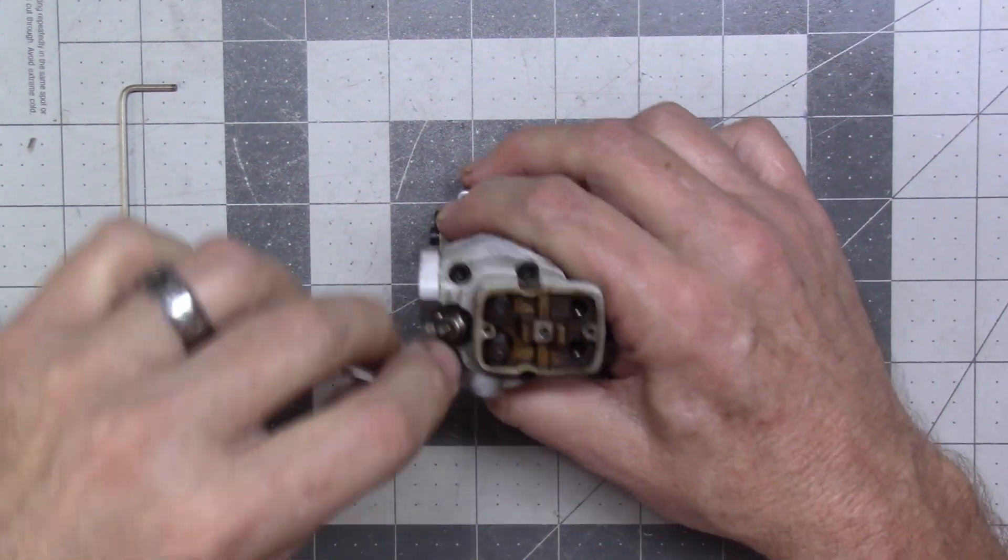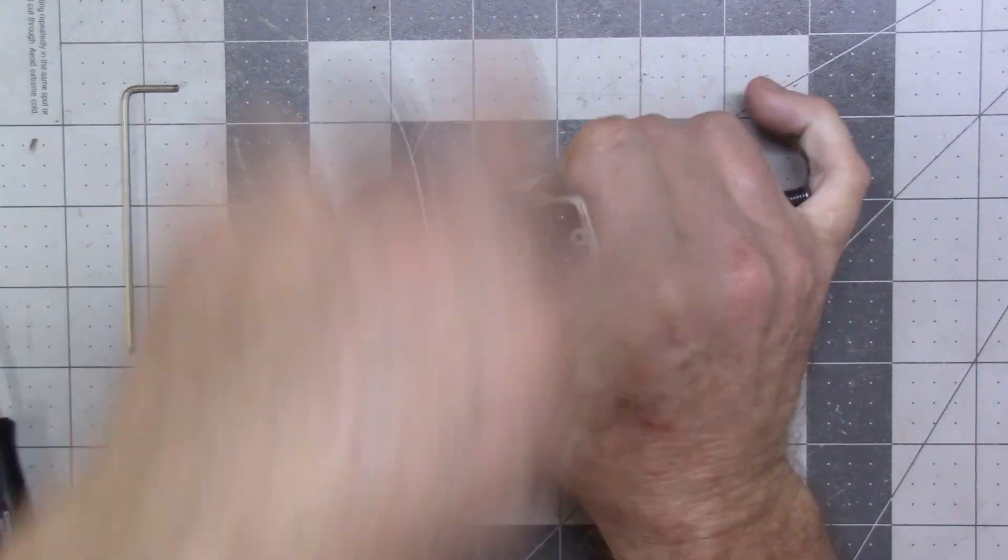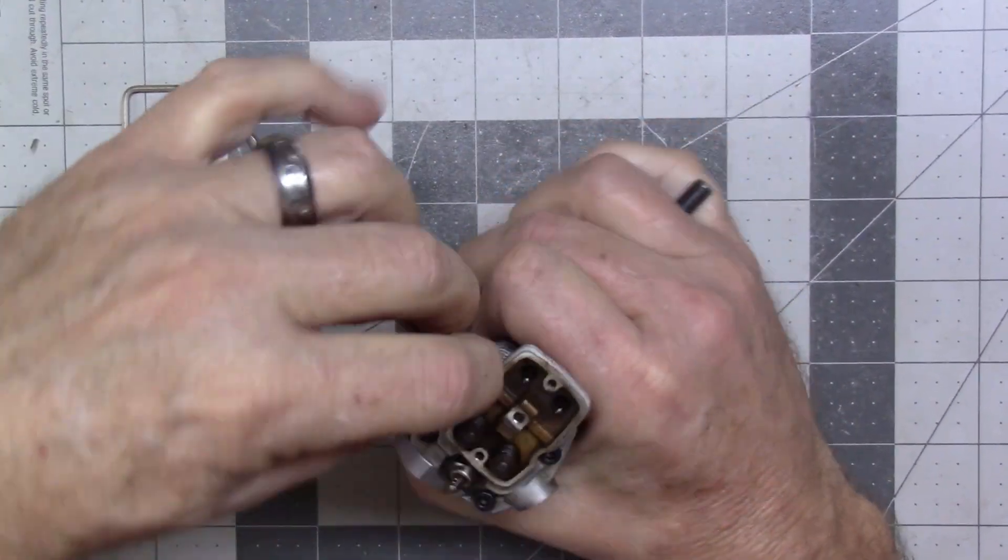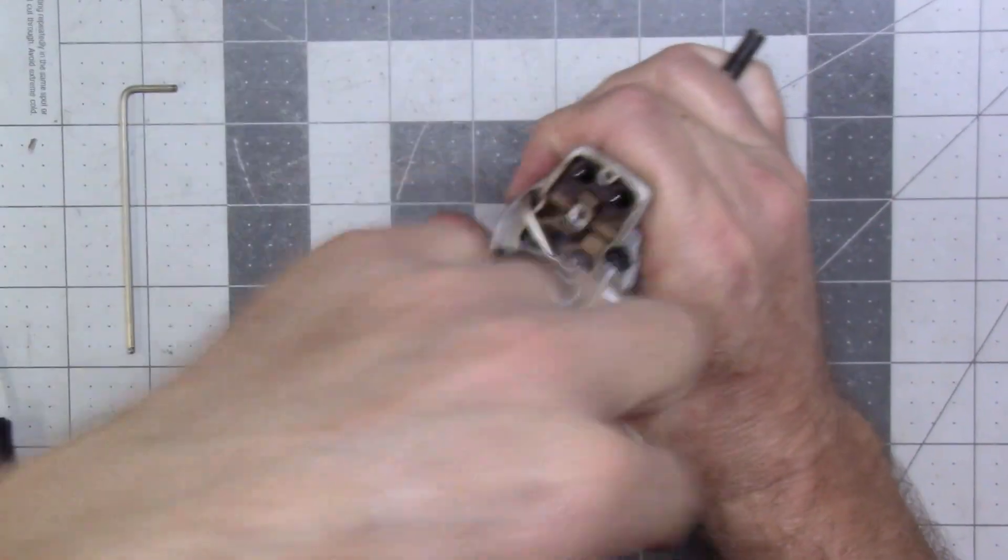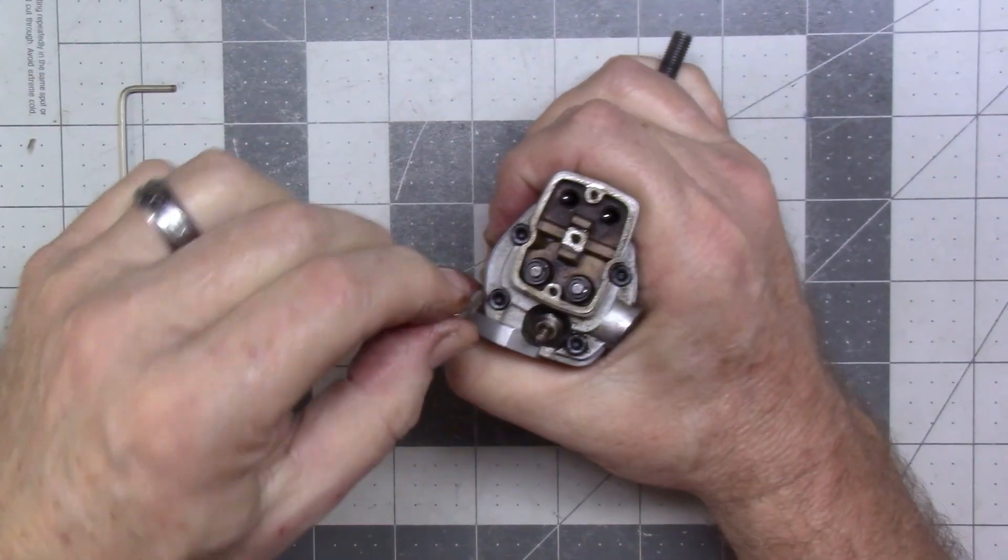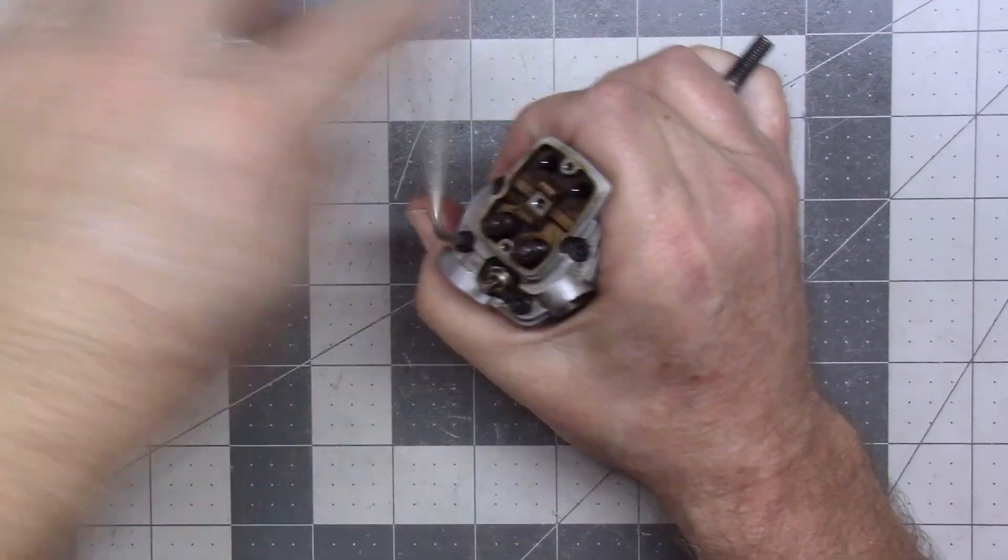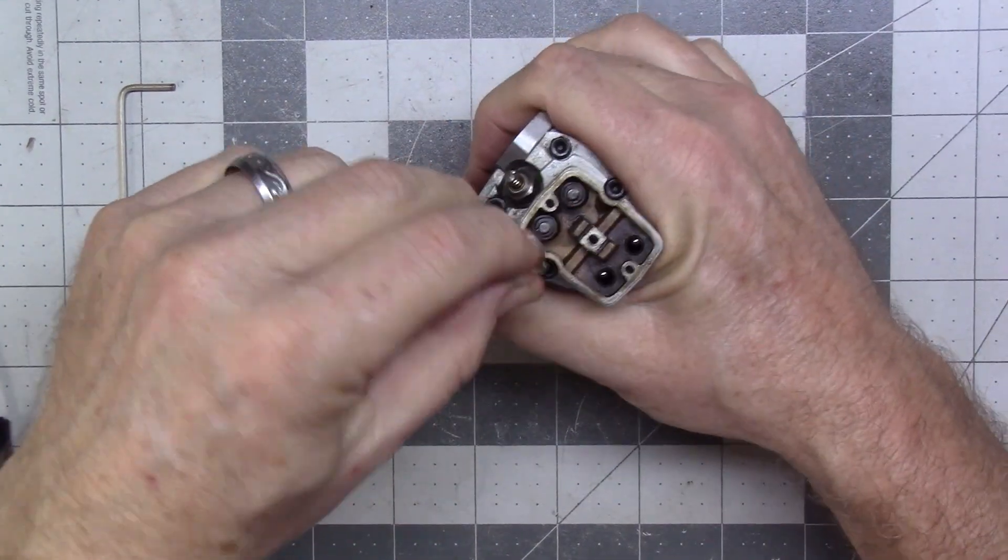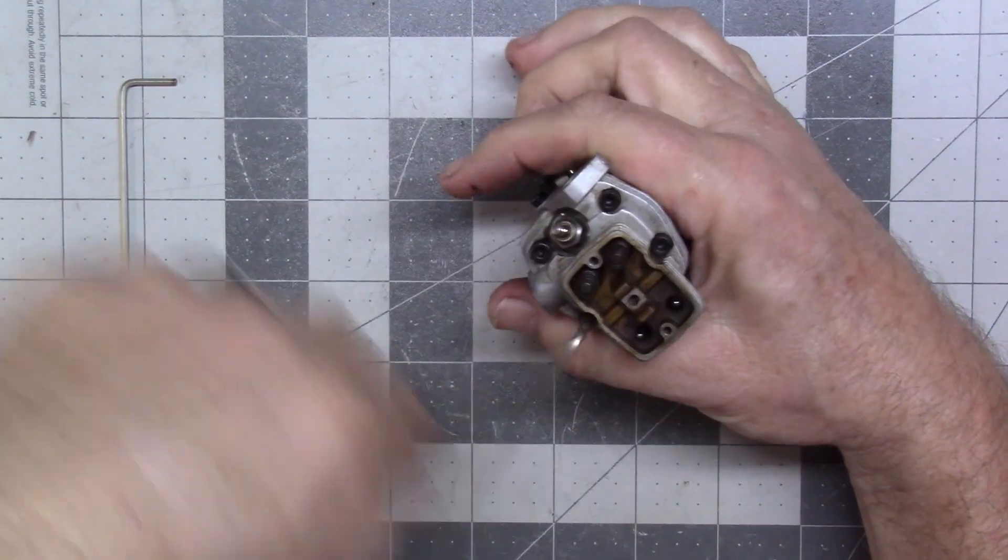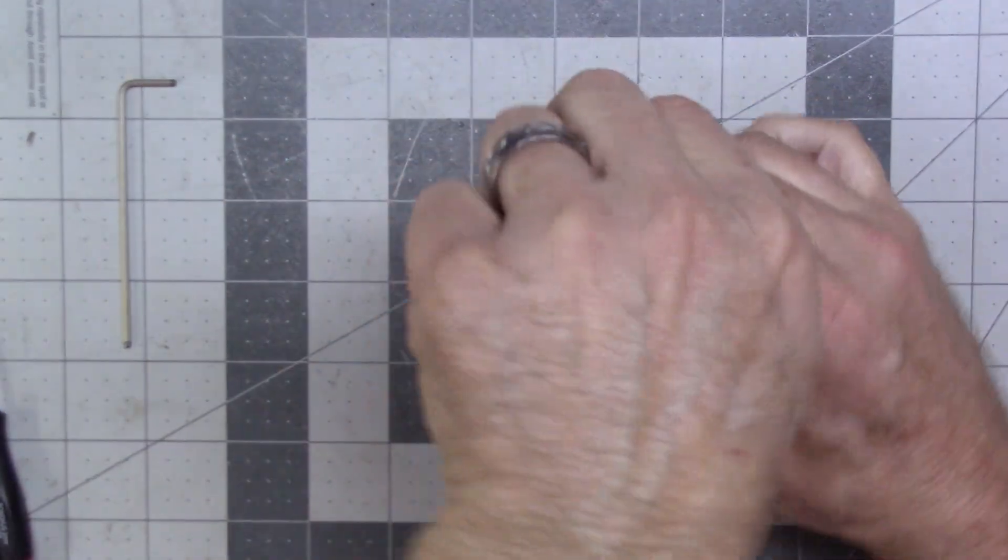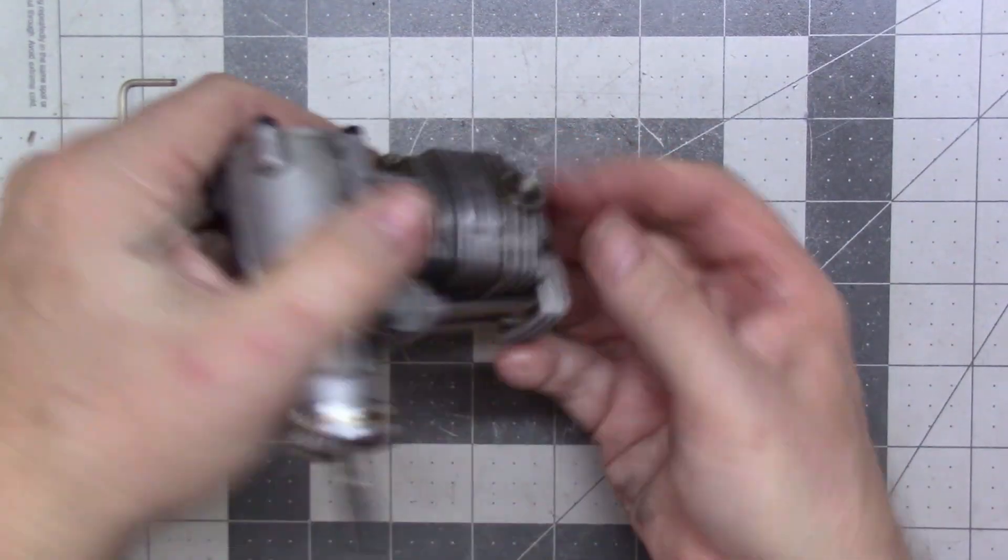Let's try it. Got to make sure you get full engagement to break these things loose. The last thing you want is to strip a head out. Now the only thing I don't have with me right here is a magnet to get those pushrods out.